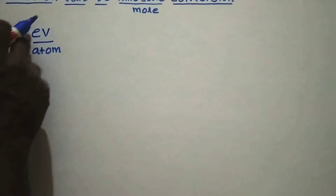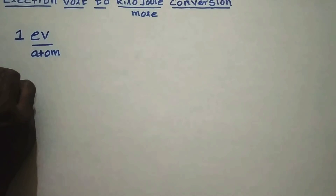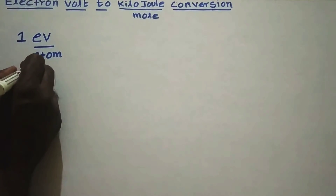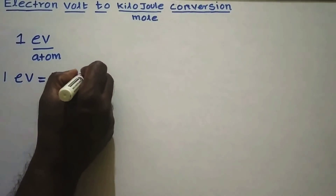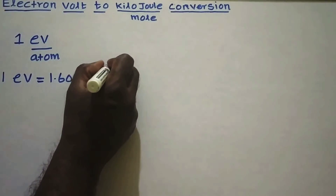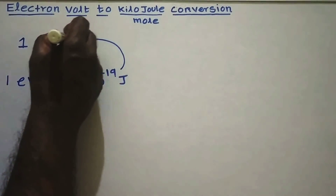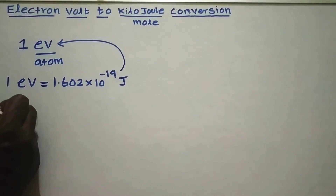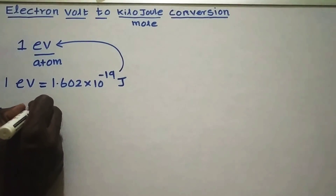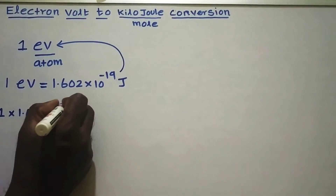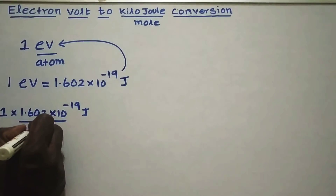First of all, we will take 1 electron volt per atom. In the numerator there is the electron volt. So note that 1 electron volt is equal to 1.602 × 10⁻¹⁹ joule. Now apply the unit replacement method: 1 × 1.602 × 10⁻¹⁹ joule divided by atom.